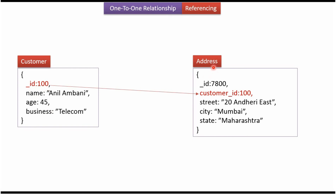Here you can see the address document, and the address document will be stored in the address collection. It has street, city, state and underscore_id, which is the primary key of address. It also has customer_id which is 100, referred from the customer document. This way we can establish one-to-one relationship between customer and address — one customer has one address.